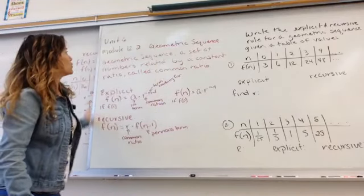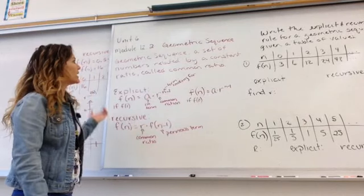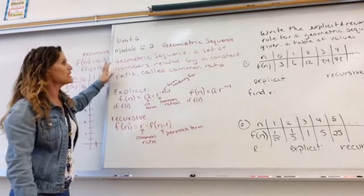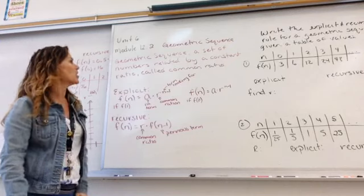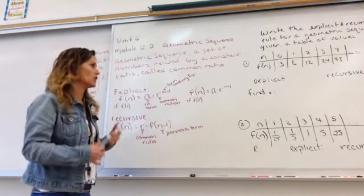Alright, so we're going to do 12-2 geometric sequences. We've already talked about what a sequence was, what an arithmetic sequence was. A geometric sequence is a set of numbers related by constant ratio. So instead of adding each time, we're multiplying each time.